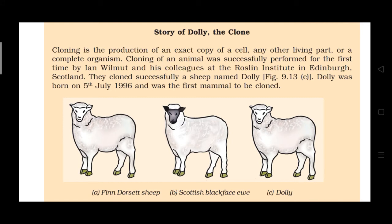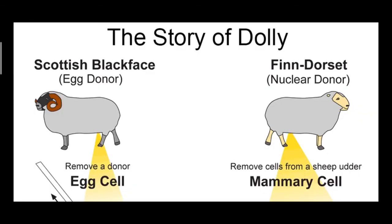Now the story of Dolly the clone. Cloning is the production of an exact copy of a cell, any other living part, or a complete organism. Cloning of an animal was successfully performed for the first time by Ian Wilmut and his colleagues. They successfully cloned a sheep named Dolly. Unlike sexual reproduction, Dolly has two parents but both parents are female. During the process of cloning Dolly, a cell was collected from the mammary gland — the milk-producing gland — of a female Finn Dorset sheep.